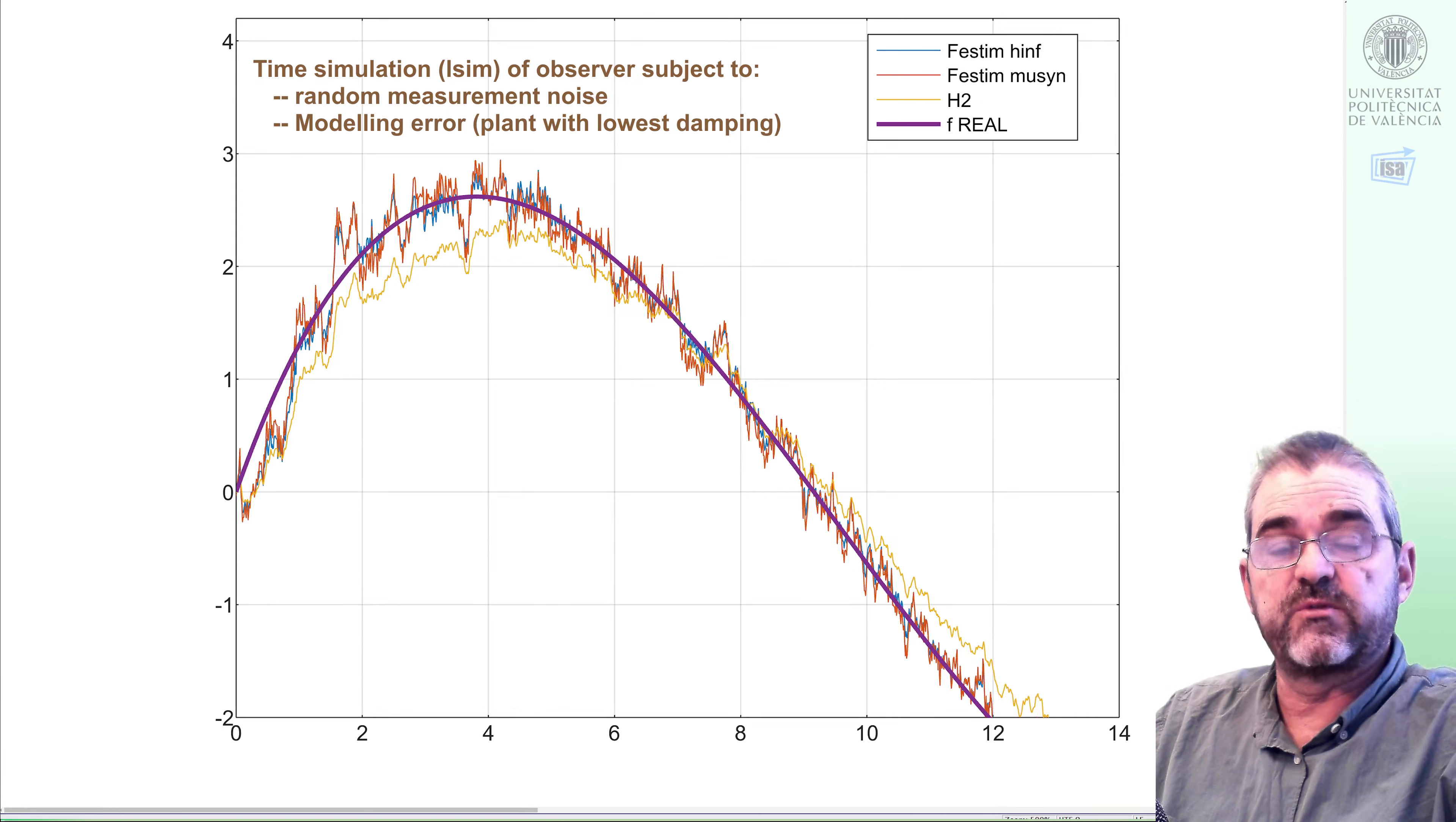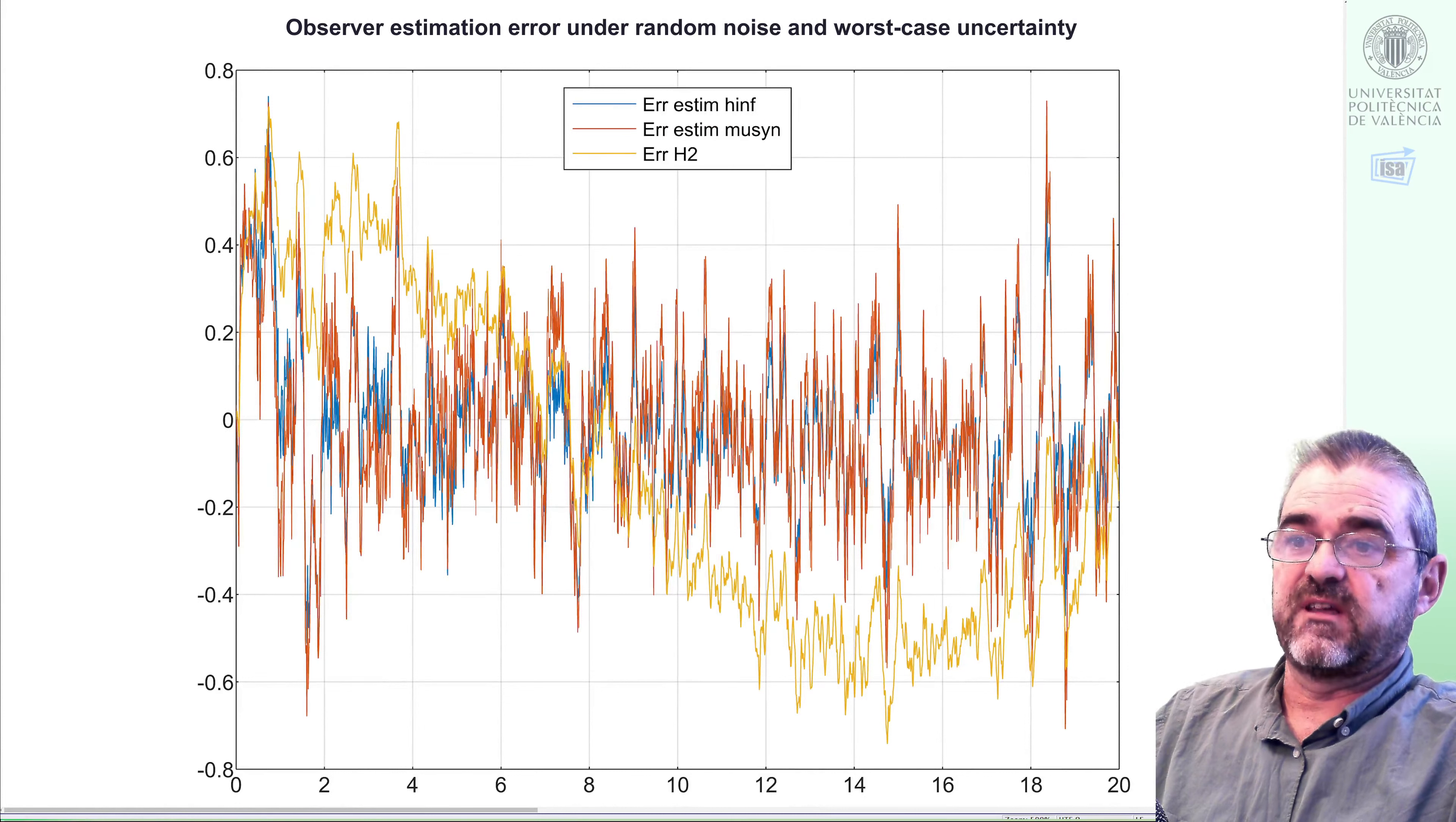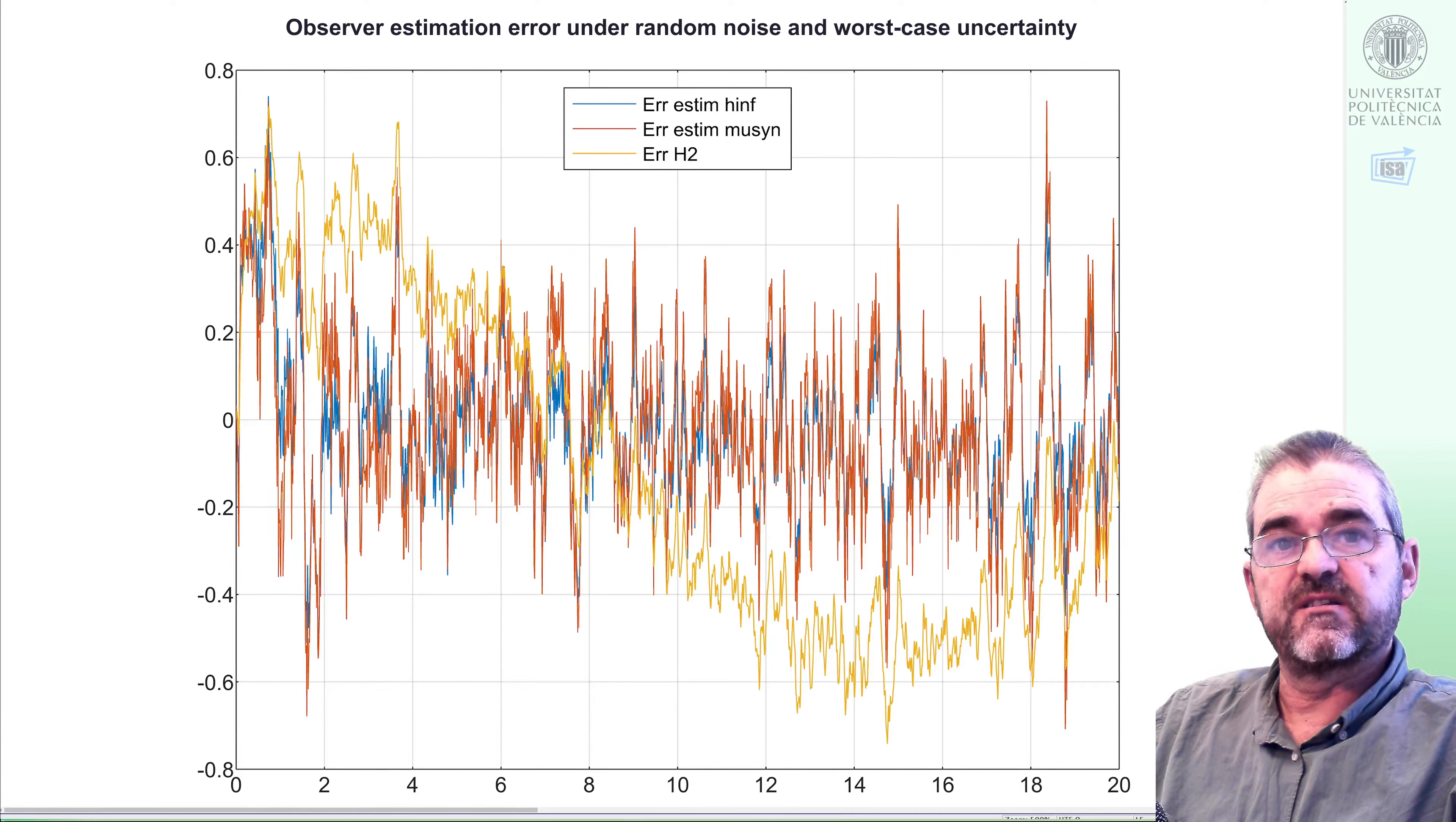So this is it, a trade-off between variance and low frequency accuracy. This is the estimation error, the difference between the actual force and the estimated one. And we see that the low frequency components of the yellow H2 thing are larger than the others, but we see also that the others have a lot of high frequency components. Well, this is it. If you don't like it, you should play with the frequency templates of several of the designs to reach a compromise you think is better.